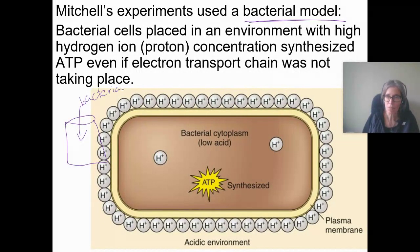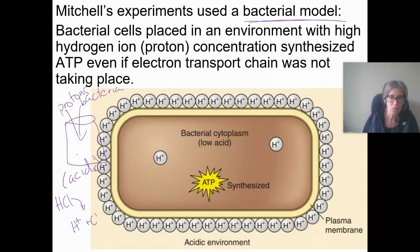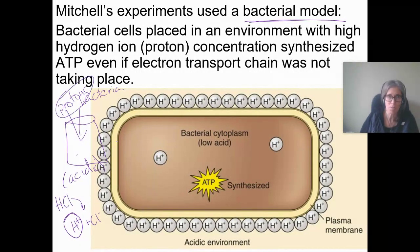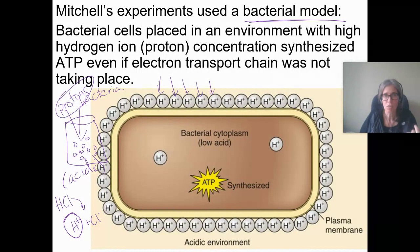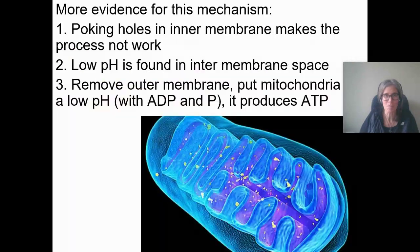He didn't give the bacteria any food, but he did give them protons — in other words, an acidic environment. Remember, an acid like hydrochloric acid releases hydrogen ions, and those hydrogens are protons — a hydrogen ion and a proton are the same thing. So the bacteria were sitting in an acidic environment with lots and lots of protons all around them. He found that even without food — without electrons to put on NADH or feed into the electron transport chain — they were still able to make ATP. What a brilliant experiment.